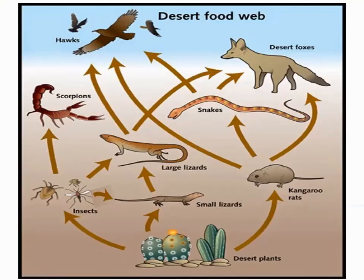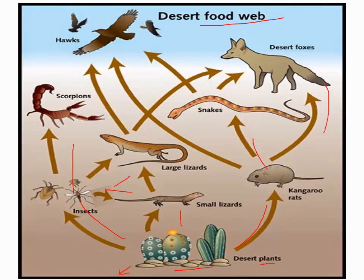Now let's discuss the desert food web. The desert has a very unique ecosystem, so different types of organisms are found here. The main producers are cactus-type plants. There are also lots of microbes and desert bacteria acting as decomposers. The cactus is eaten by kangaroo rats, mice, small lizards, and insects. These insects are eaten by scorpions and lizards. The kangaroo rat is prey for snakes, desert foxes, and hawks. Snakes are also eaten by hawks and desert foxes. The top predators in the hot desert ecosystem are hawks and the desert fox.